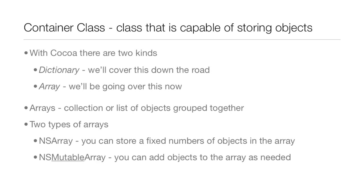That's where container classes come in handy. A container class is a class that is capable of storing objects. There are two types of container classes available in Cocoa: the first is a dictionary, which we'll cover down the road, and then there's array, which is what we'll be going over in this lesson.